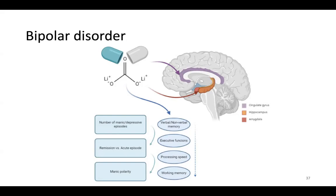Chlorpromazine, aripiprazole, quetiapine, risperidone, olanzapine, and ziprasidone are approved by the FDA for treatment of the manic phase of bipolar disorder. Fluoxetine plus olanzapine in combination and quetiapine are approved for treatment of bipolar depression.